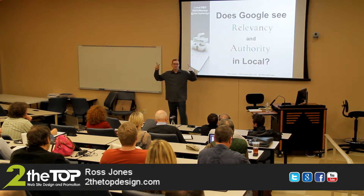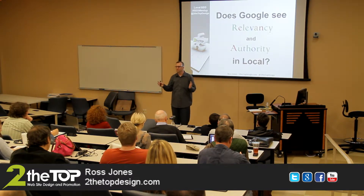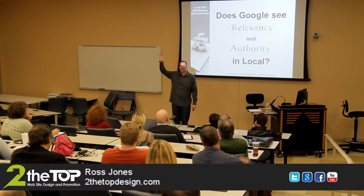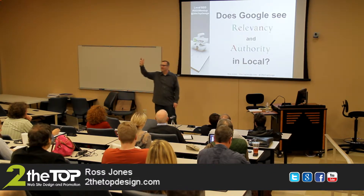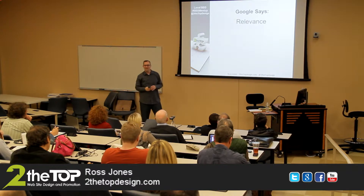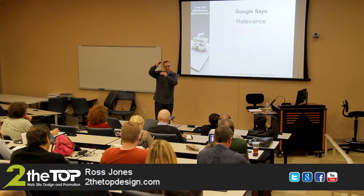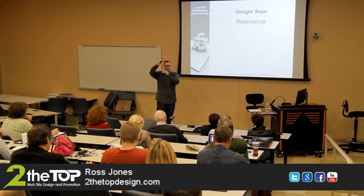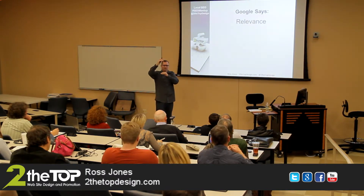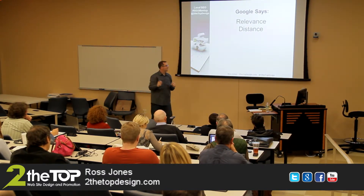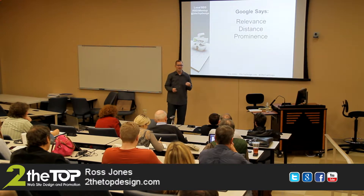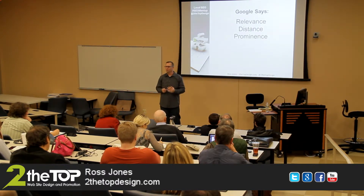We talked about relevancy and authority. In local, does Google care about relevancy and authority, or throw that out and start from scratch? No way — they'll find some way to use the same concepts. They say there are three primary things when looking at Google Place Search: relevance, distance, and prominence. Those are the three things they're specifically looking at for local place results.